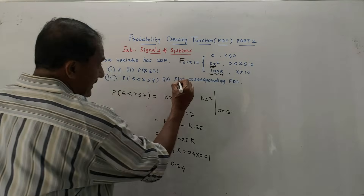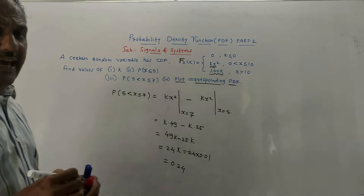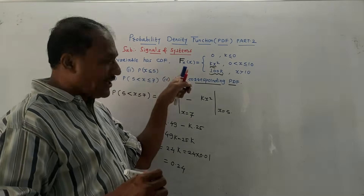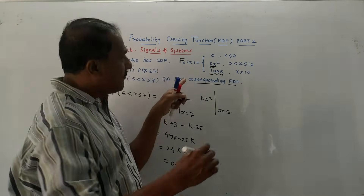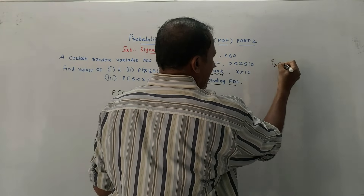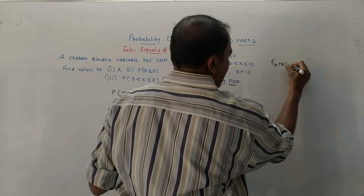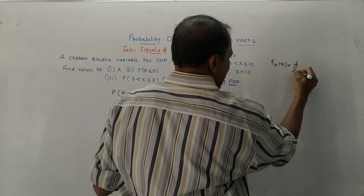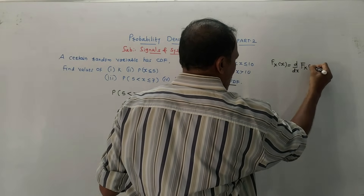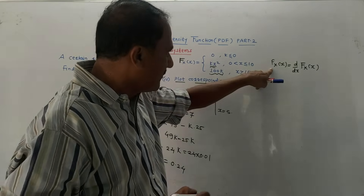For the next part, it is asked to plot the corresponding PDF. Recall: the given value is capital F, meaning it is the CDF. We have to calculate the PDF, denoted by small f(x). The PDF is given as d/dx of CDF, that is d/dx of capital F(x). So the derivative of the CDF gives the PDF.